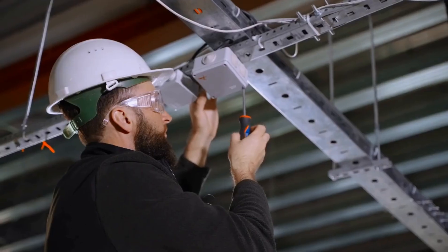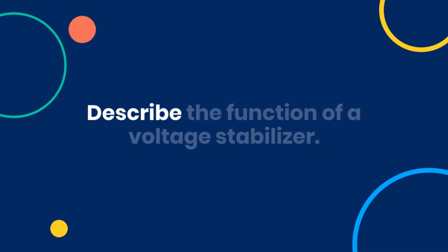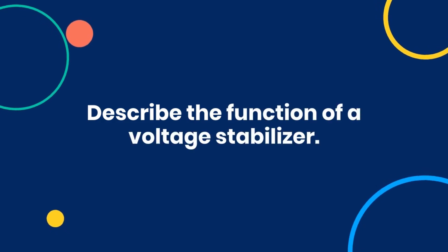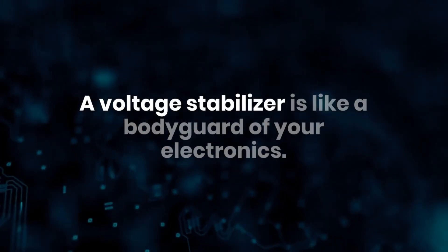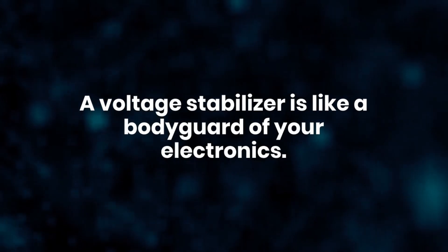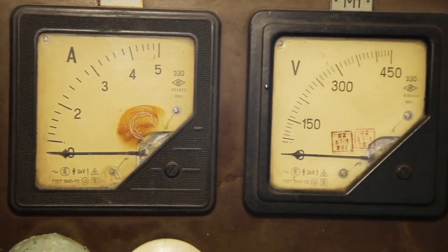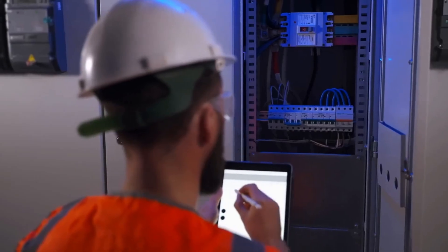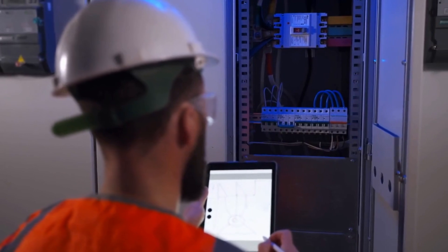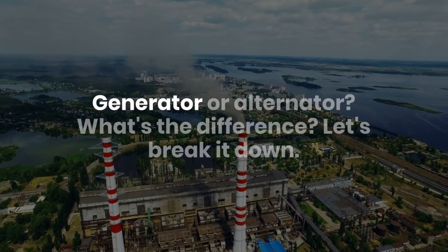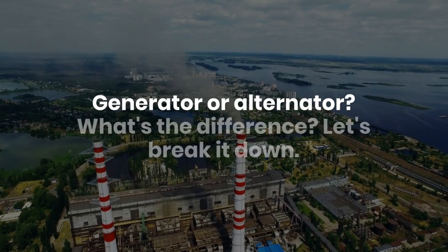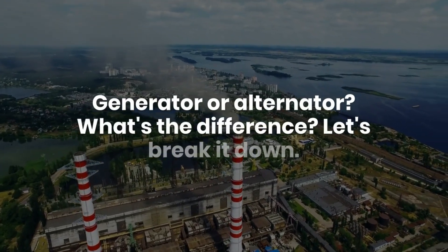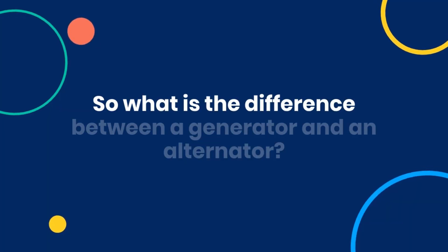Describe the function of a voltage stabilizer. A voltage stabilizer is like a bodyguard for your electronics — it keeps the voltage level constant despite fluctuations in the input voltage. This protection ensures that your devices run smoothly without any damage from voltage spikes or drops.